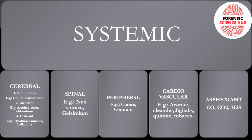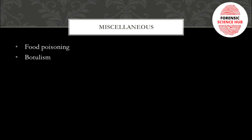Somniferous means sleep-inducing. Inebriant means that when you take these poisons you will have a feeling of drunkenness. Deliriant means you will experience hallucinations. Spinal systemic poisons include nux vomica and gelsemium. Peripheral poisons include curare and conium. Cardiovascular poisons include aconite, oleander, digitalis, quinine, and tobacco. Asphyxiant poisons include gases like carbon monoxide, carbon dioxide, methane, and hydrogen sulfide (H₂S).